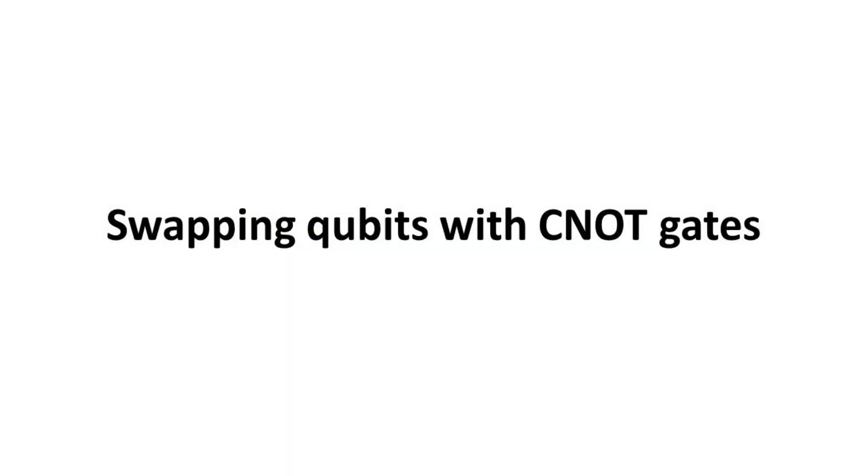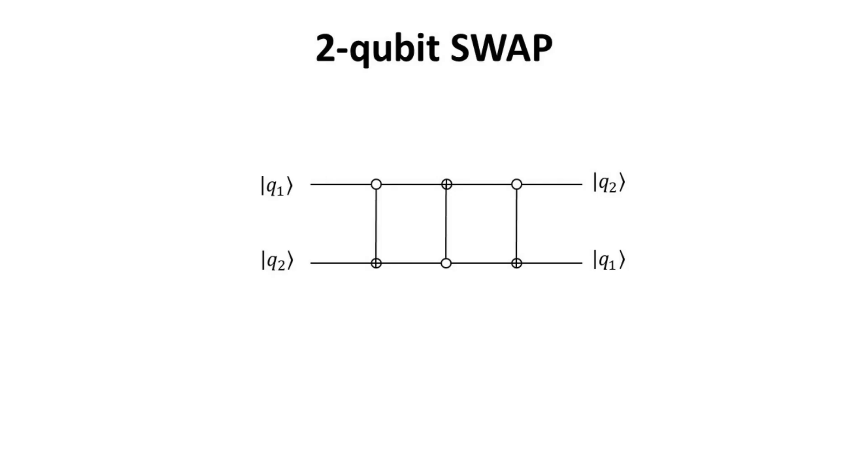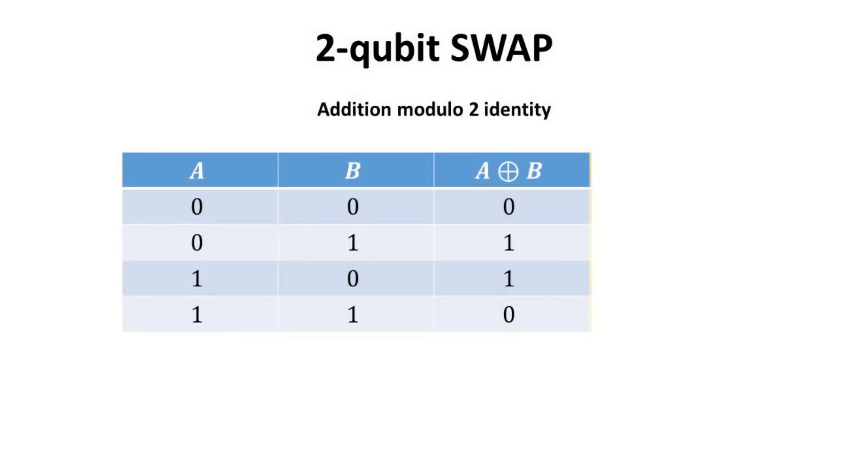Part 4. Swapping qubits with CNOT gates. We show here the circuit that performs the two-qubit swap. The task of this circuit is self-explanatory. It swaps the states of qubits 1 and 2. We note that the swap circuit consists of three CNOT gates in a row, alternating the control and target bits with each CNOT application. To help understand the application of this circuit, recall the XOR gate truth table. The output is 1 when the initial inputs are not equal to each other. Recall that XOR operation is equivalent to the addition modulo 2.